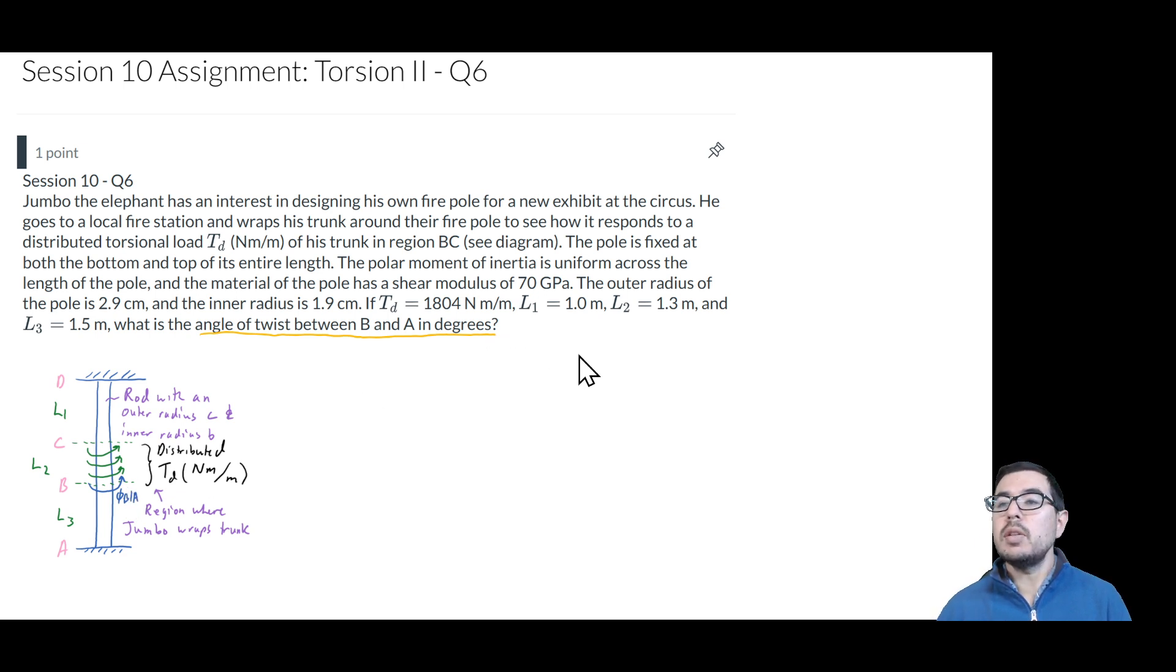To get started, let's look at one of the constitutive relationships that we've discussed in the course, which is that we can relate the angle of twist between two points to the internal torque times the length of that region all over JG. That is, of course, assuming that the internal torque in that region is constant. Now, we don't know the internal torque TAB, so that is something that we need to calculate. And to get us started in that calculation, we can look at the external equilibrium of the system.